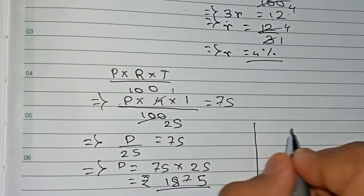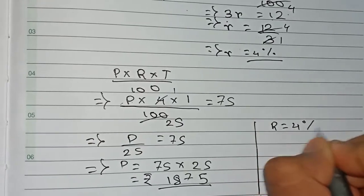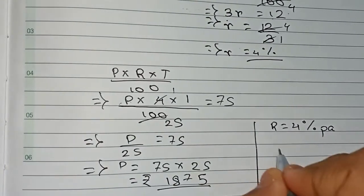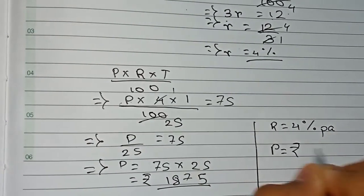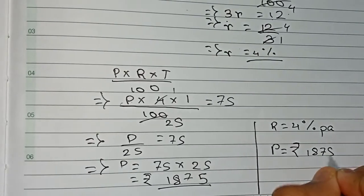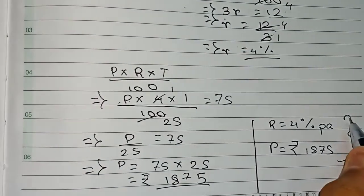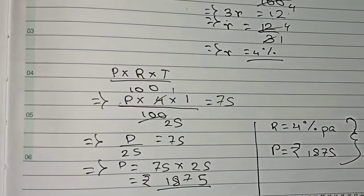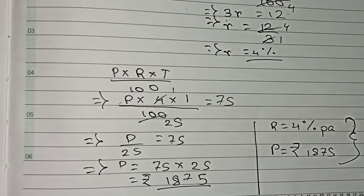Write down the information you got: the rate of interest is 4% per annum, and the principal is ₹1875. This is the final answer for this question. Thanks for watching this video, and please subscribe to my channel for more solutions.